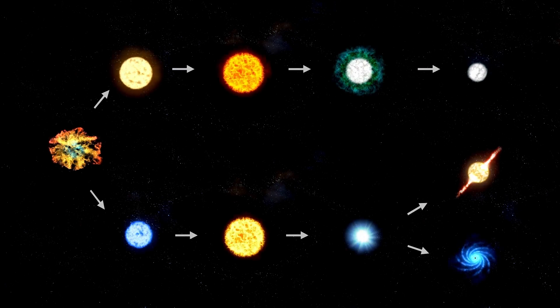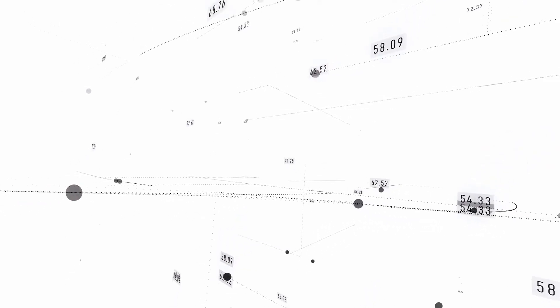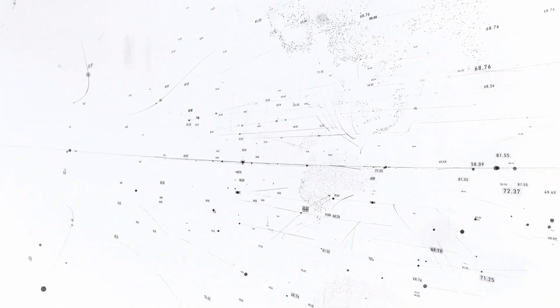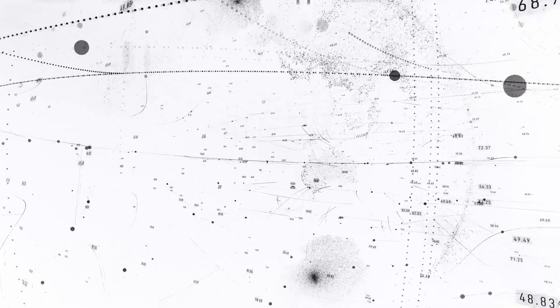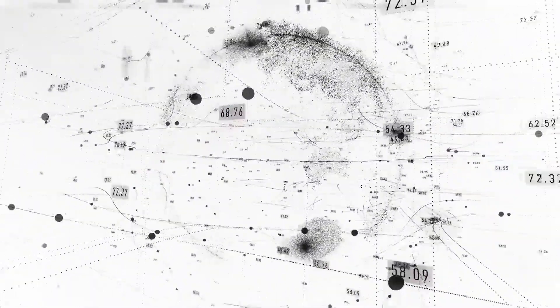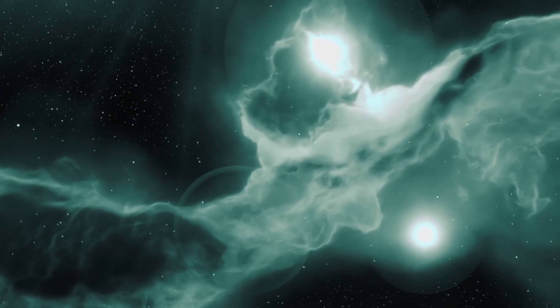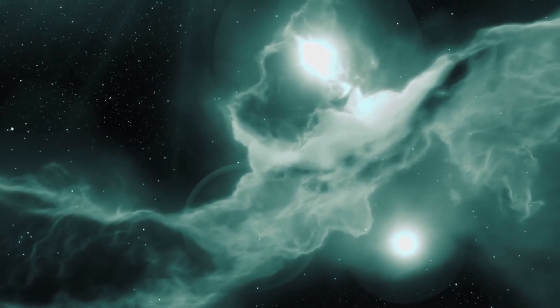Some argued it was alien technology. Others insisted it was a fluke of physics. But the debate never ended because the object disappeared before we could study it. Now, with 3i Atlas in range, the mystery of Oumuamua came rushing back. Not because this new object resembled it, but because it surpassed it in every metric.